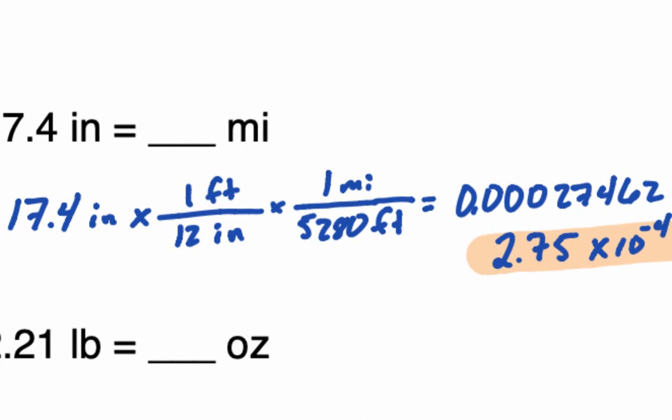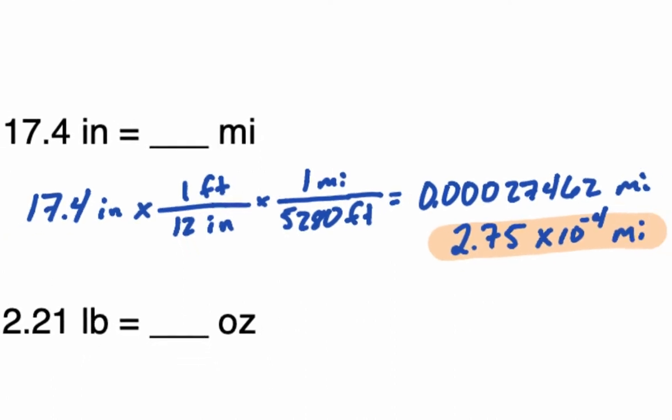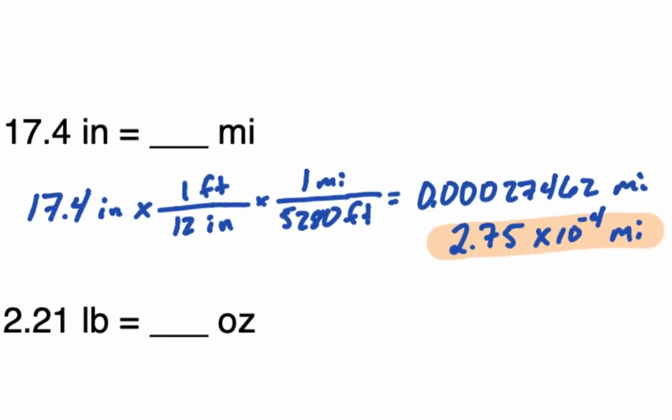Let's look at a few more examples. For 17.4 inches, we calculate that out to be 0.00027462 miles. With your calculator in scientific notation mode, this is displayed much more simply as 2.7462 × 10⁻⁴. When we write our answer out, since we only need three significant digits, we write 2.75 — because the six gets dropped and rounds the four up to five.